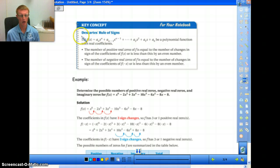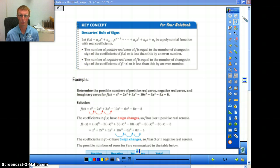What this rule does is it allows us to figure out how many positive real solutions we're going to get, or real zeros, how many negative real zeros, and even it could help us to figure out if we're going to have any imaginary zeros. In a nutshell, what this is saying is the number of positive real zeros of f is equal to the number of changes in signs of the coefficients of f(x) or is less than this by an even number. So let's just get right into this example so that way I can kind of show you what this means.